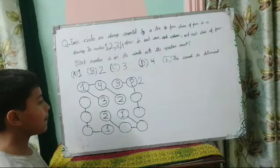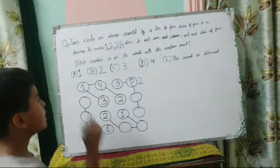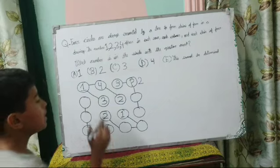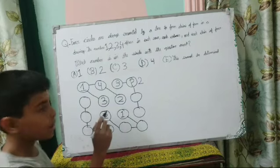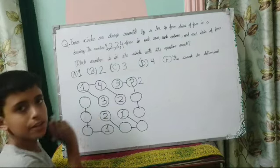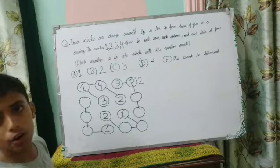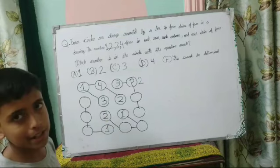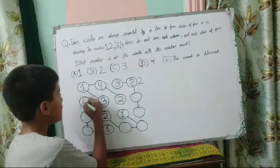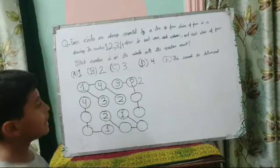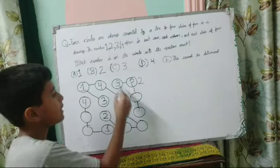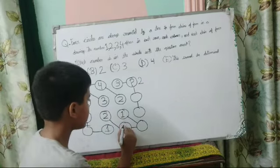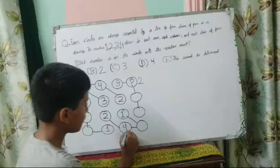Next, I am going to do this circle. In this circle, 3 and 2 are already occupied, so 3 and 2 cannot come here. 1 is also already occupied, so 1 cannot come here. The only number left is 4. Next, 3, 2, and 1 are already occupied here, so the number which comes is 4.